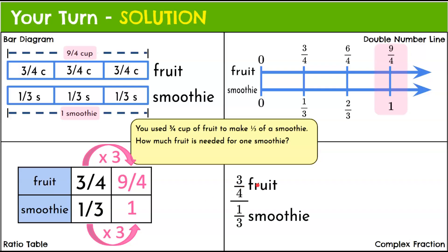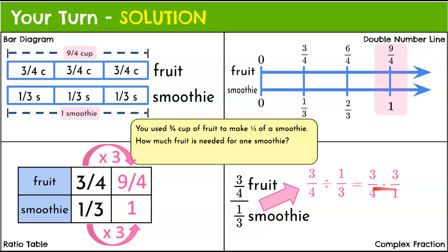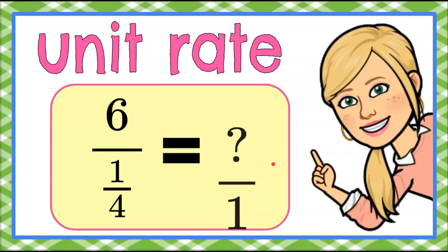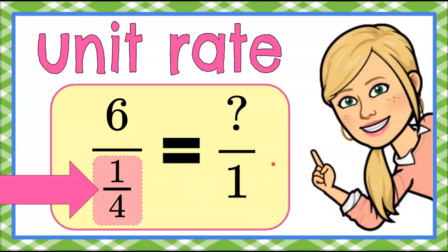And finally our complex fraction: three-fourths cup of fruit to one-third of a smoothie, rewritten as three-fourths divided by one-third. Keep, change to multiplication, and multiply by the reciprocal — flip one-third to three over one. So three-fourths multiplied by three over one: multiply numerators, three times three is nine; multiply denominators, four times one is four. We get nine-fourths, which is also two and one-fourth cups of fruit per smoothie. And that is unit rate using fractions in four different ways — a bar diagram, a double number line, a ratio table, and a complex fraction.